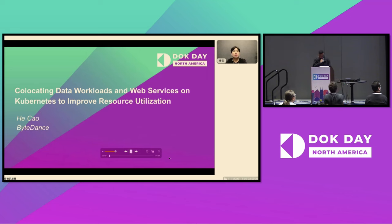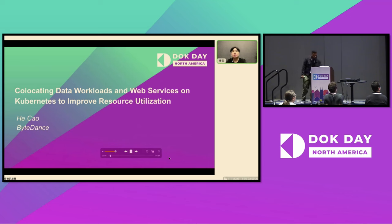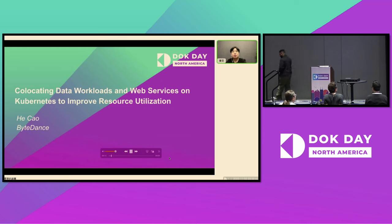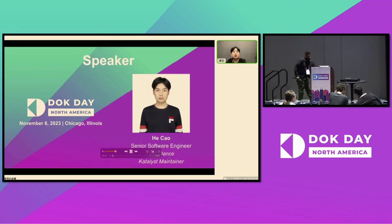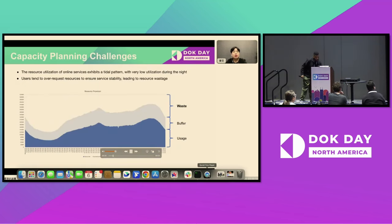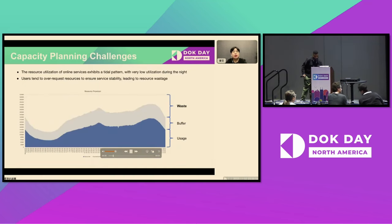Hello, everyone. My name is Hei Shao. Today, I'm going to share a topic titled co-locating data workloads and web services on Kubernetes to improve resource utilization. I am a senior software engineer at ByteDance and also a maintainer of the Catalyst project. First, I will start by introducing the background of co-location.